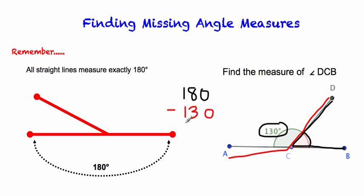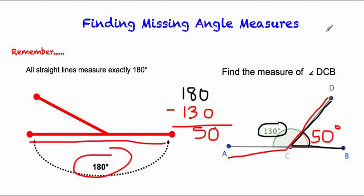So 180 minus 130, and we will end up with 50 degrees. Surprise! Draw a turkey next to the place in your notes where you wrote down the definition for complementary and supplementary angles.